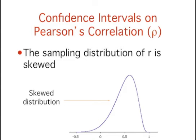In this section, we're going to talk about computing a confidence interval on the population value of Pearson's correlation. The population value is called rho.